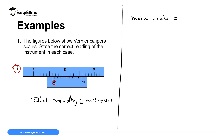We read the value on the main scale which is opposite and to the left of the zero mark of the Vernier scale. Here we have 7, 7.1, 7.2, 7.3, 7.4, 7.5, 7.6 — so the main scale reading is 7.6 centimeters.